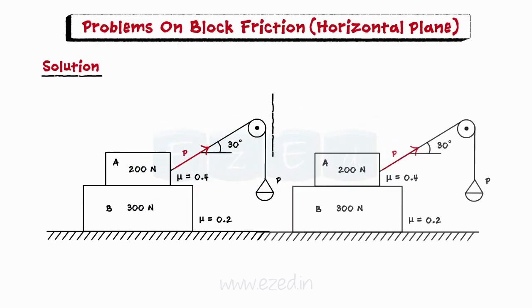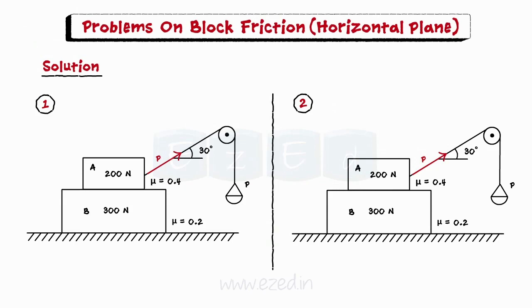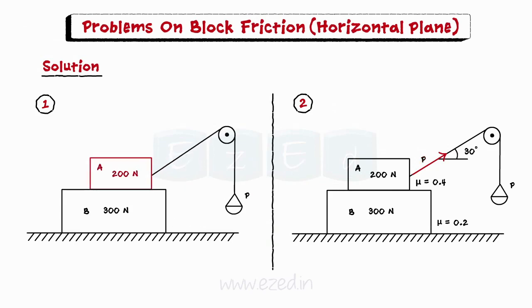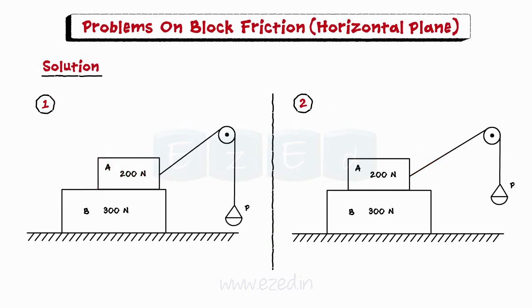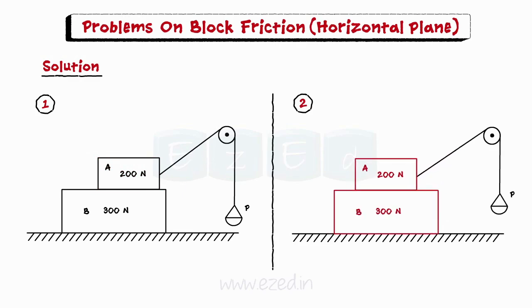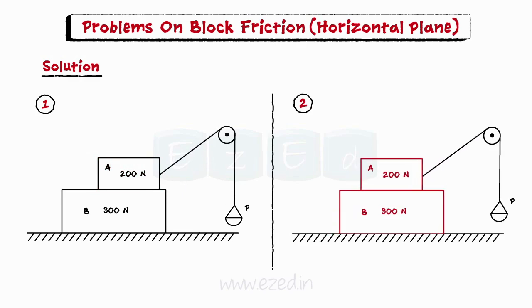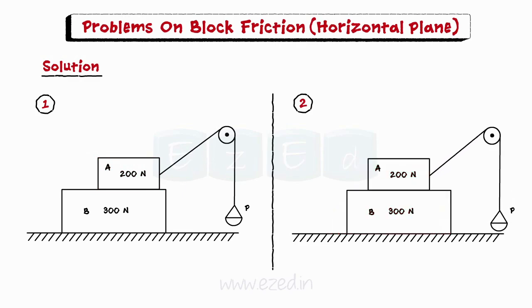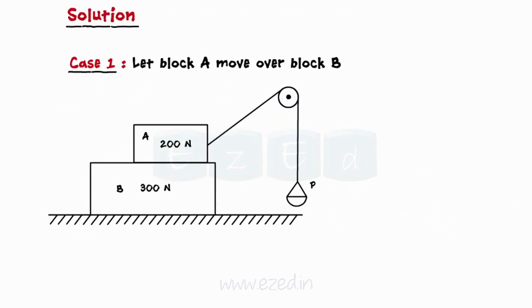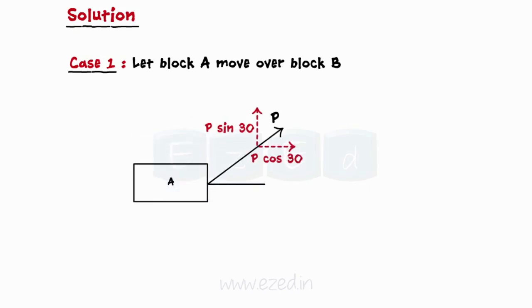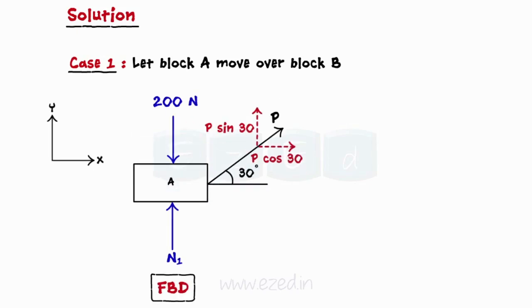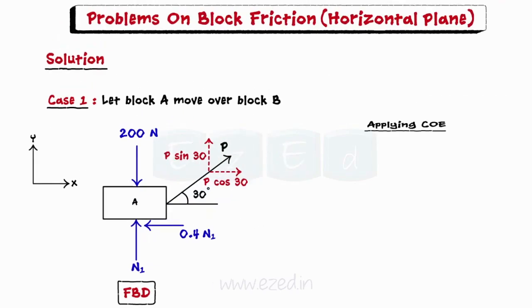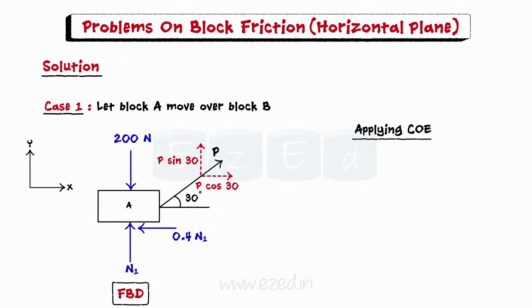In this system, there are two possibilities of motion. The first is that block A moves over block B, while the other is that both blocks A and B move together over the horizontal surface. Let us now analyse the first case. We will first isolate block A and then draw its free body diagram.